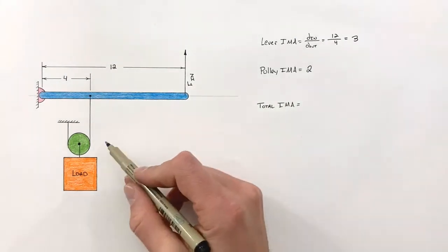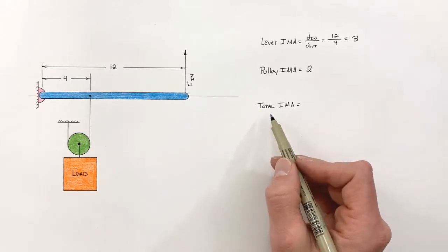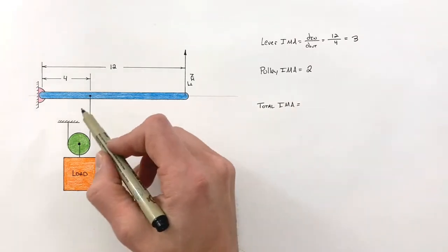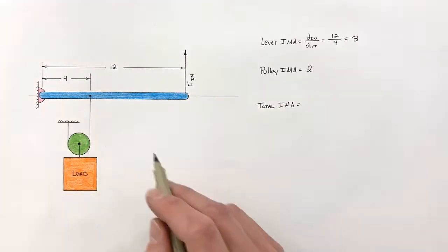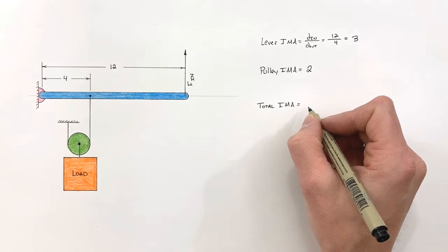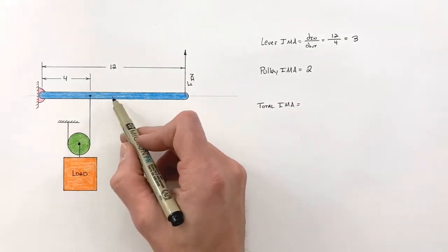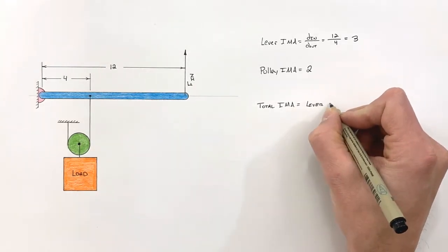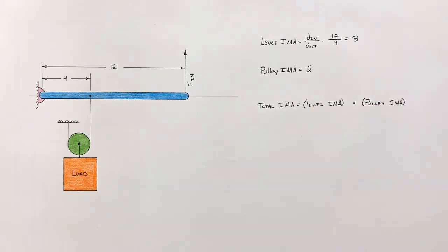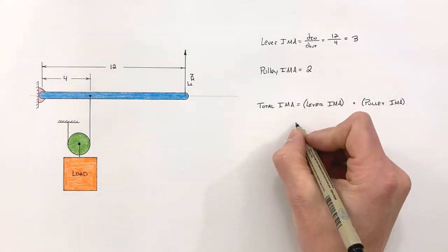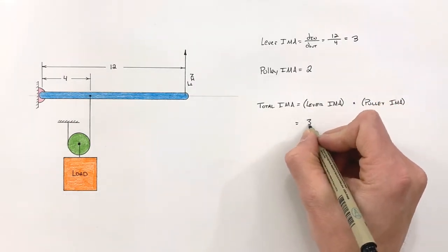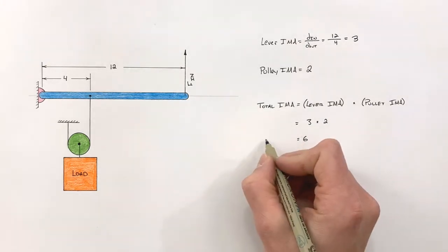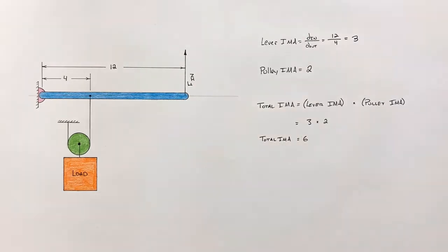Any time we're dealing with a compound machine, the total ideal mechanical advantage is simply the product of the IMAs of each of the simple machines that make up that compound machine. We just multiply together the IMA of the lever and the IMA of the pulley — that's 3 multiplied by 2, which gives us a total IMA of 6.